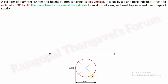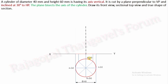You can give notations — even continuous notations like a, a1, b, b1, c, c1, d, d1. A, b, c, d is the base circle of the cylinder. A1, b1, c1, d1 is the top circle of the cylinder.